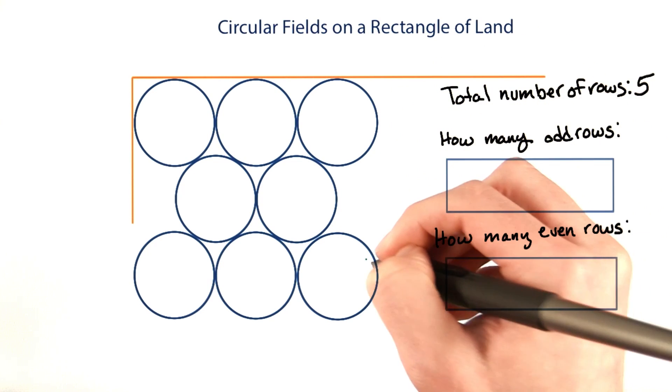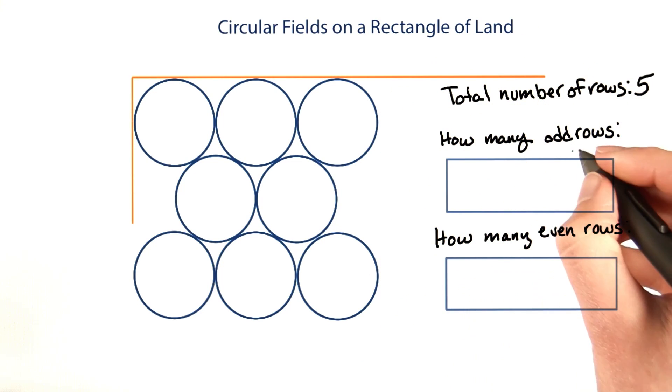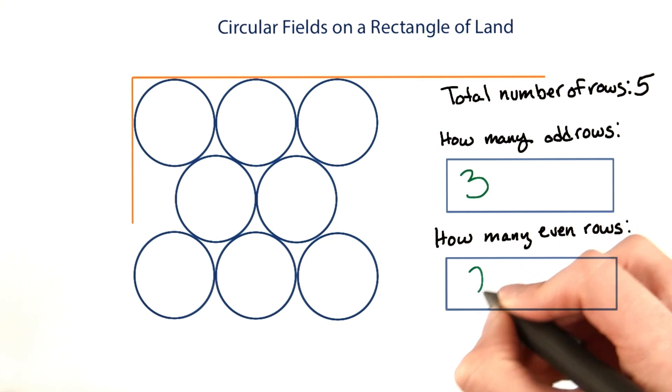If there are five rows, the first, third, and fifth would be odd rows. And the second and fourth would be even rows.